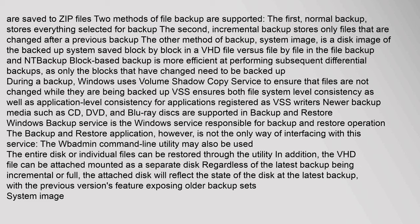The other method of backup, system image, is a disk image of the backup system saved block by block in a VHD file, versus file by file in the file backup and NT Backup. Block-based backup is more efficient at performing subsequent differential backups, as only the blocks that have changed need to be backed up. During a backup, Windows uses Volume Shadow Copy Service to ensure that files are not changed while they are being backed up.